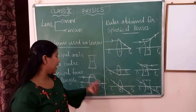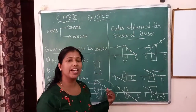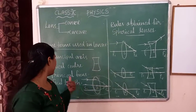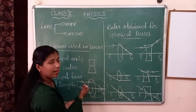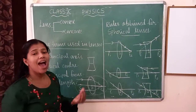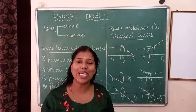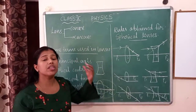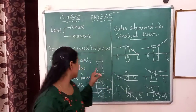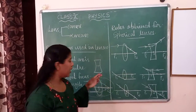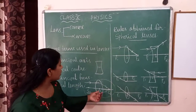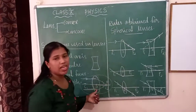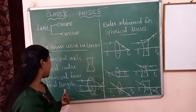The line passing through the center of curvature and optical center is the principal axis. There are two centers of curvature. Principal focus means the point where a ray of light parallel to the principal axis, after refraction, coincides — in case of a convex lens it meets at a real point, and in case of a concave lens it appears to meet. Focal length is the distance between this focus and the optical center.